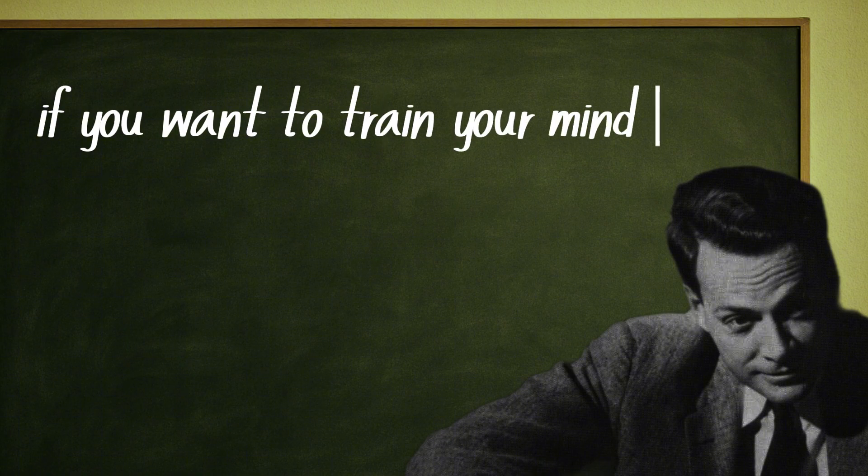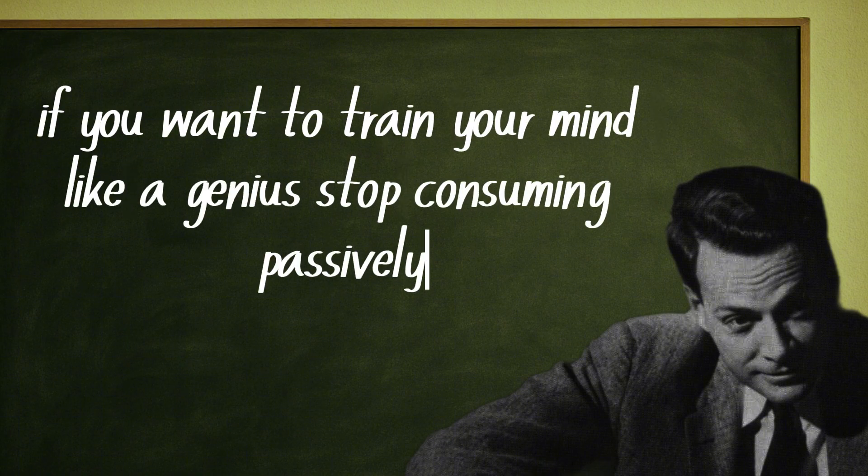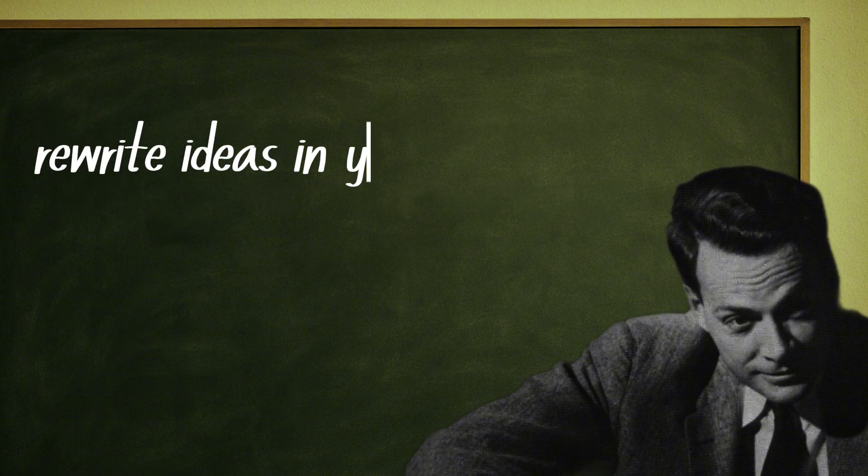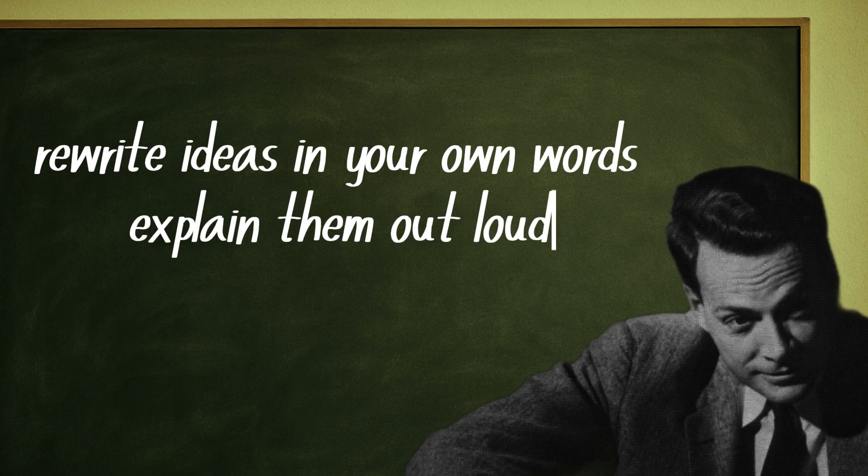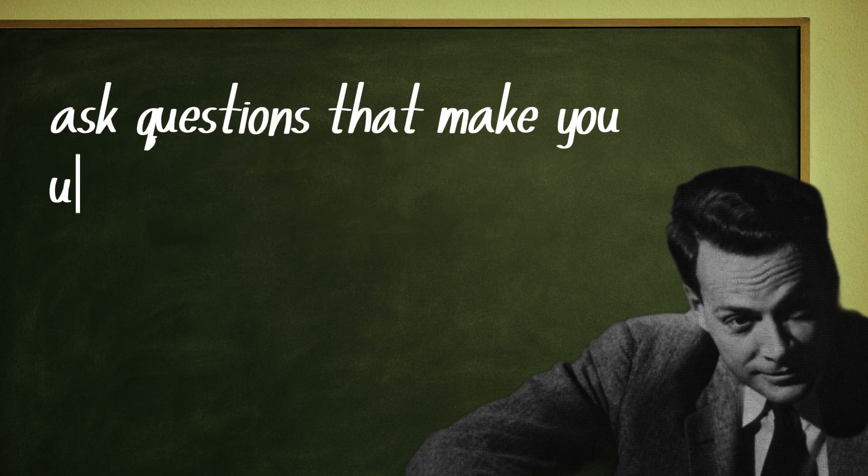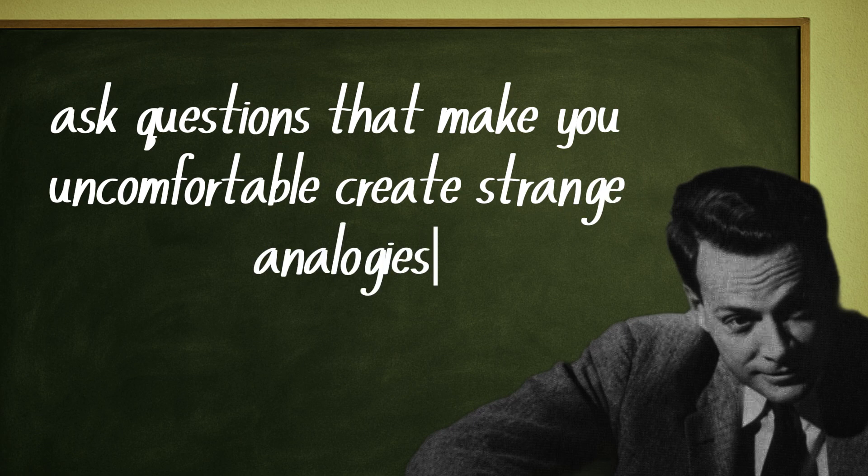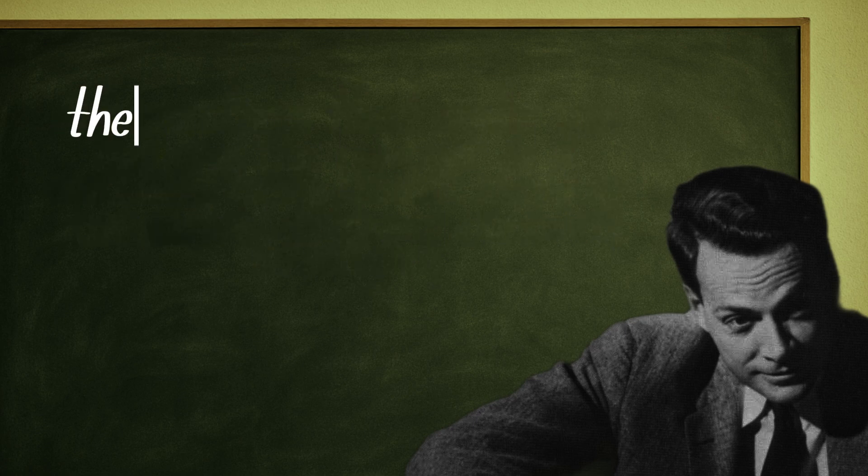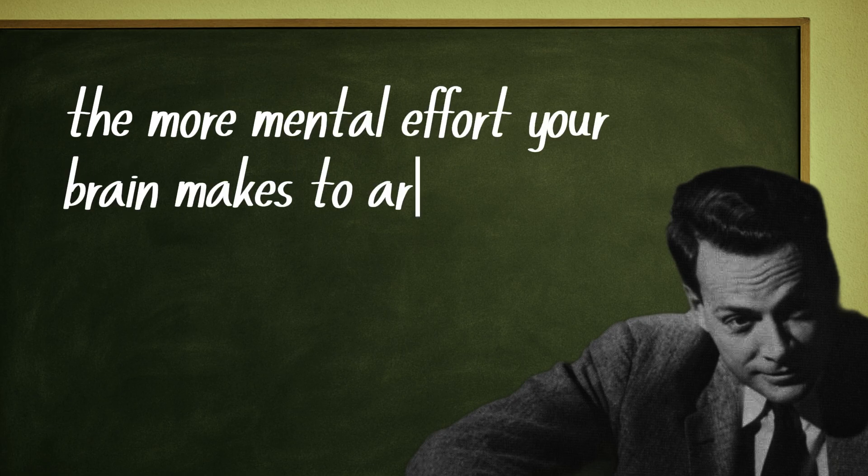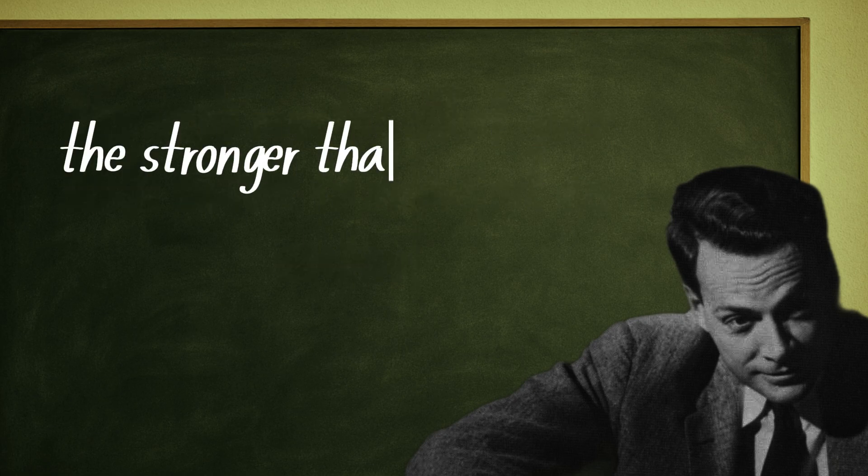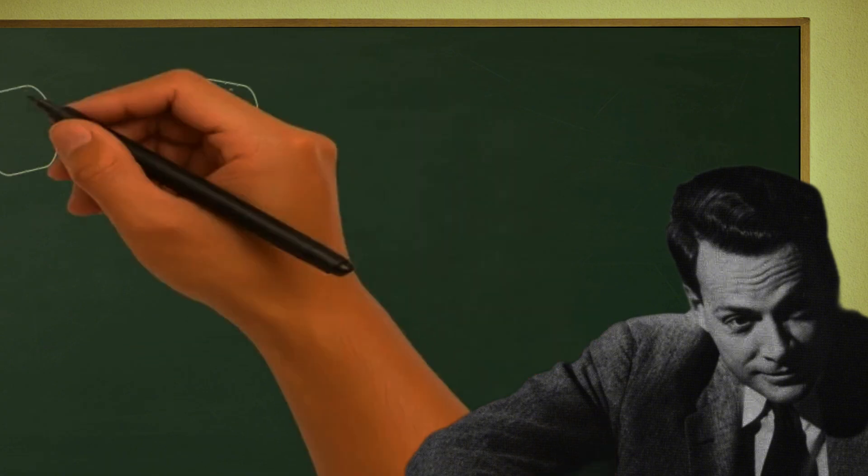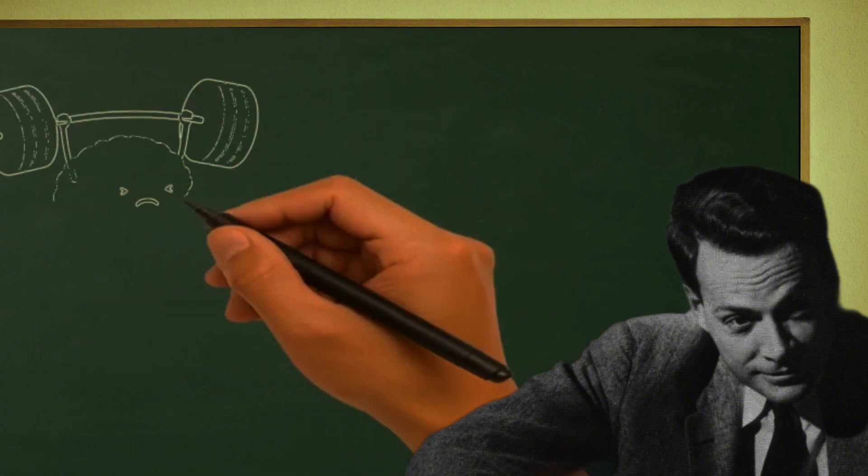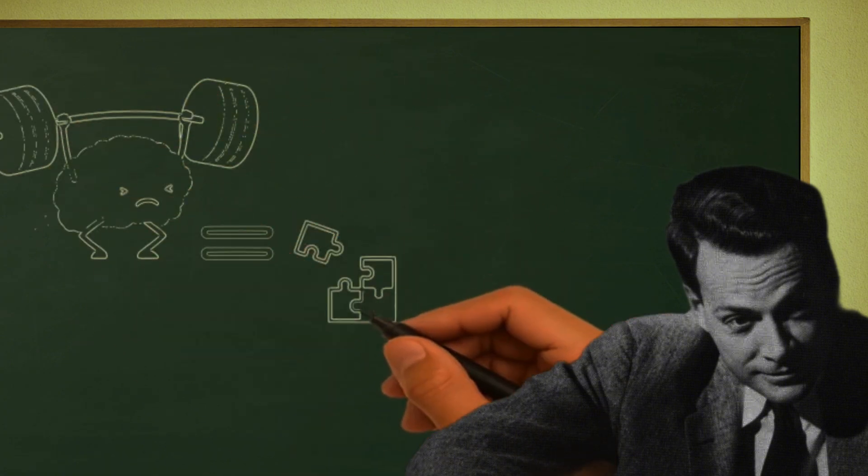If you want to train your mind like a genius, stop consuming passively. Rewrite ideas in your own words. Explain them out loud. Ask questions that make you uncomfortable. Create strange analogies. Imagine the concept in a completely different context. The more mental effort your brain makes to arrive at an answer, the stronger that knowledge becomes. Learning is like lifting weights. The more cognitive strain, the stronger your memory muscle grows.